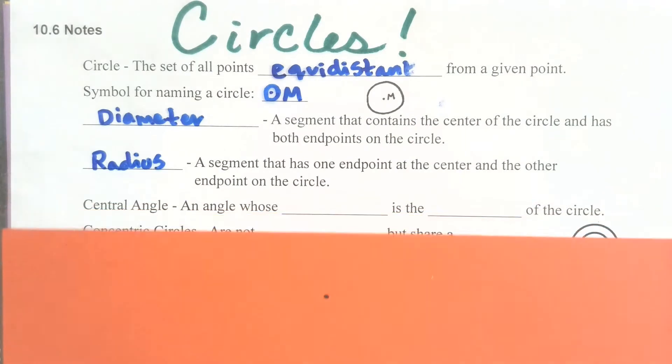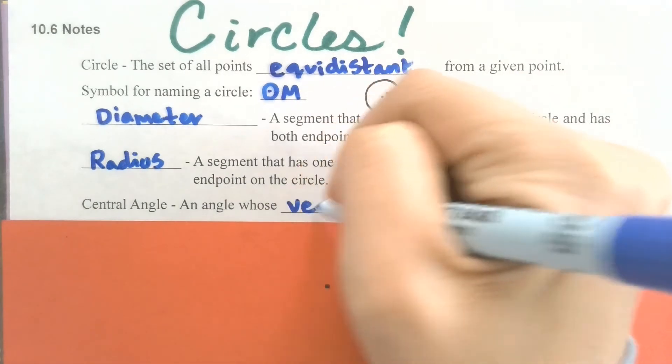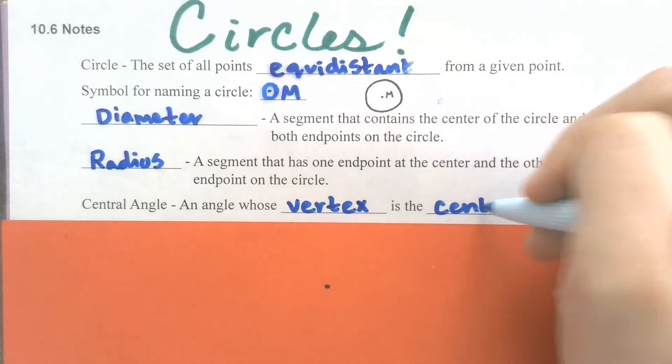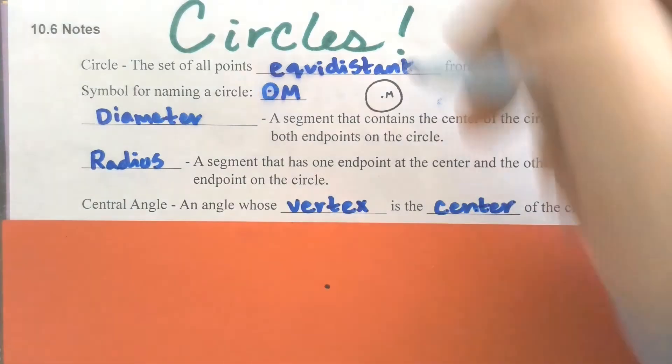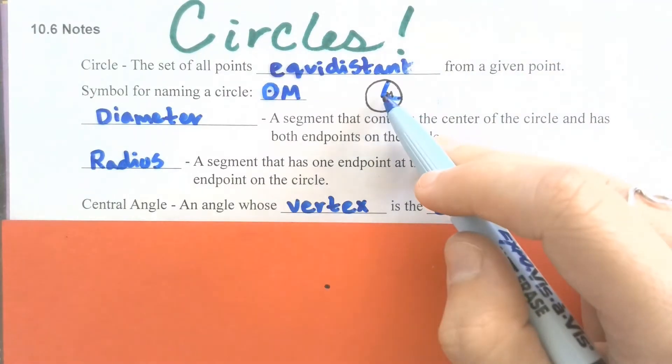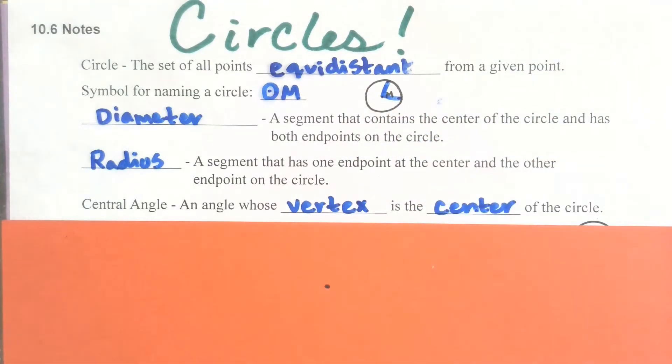We're still going to be using some things that we already knew, and this one might be new. Our central angle is an angle whose vertex is on the center of the circle. If we have an angle that looks like this where the vertex is the center of the circle, that would be a central angle.